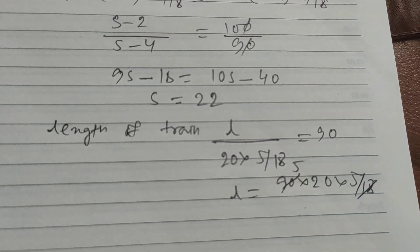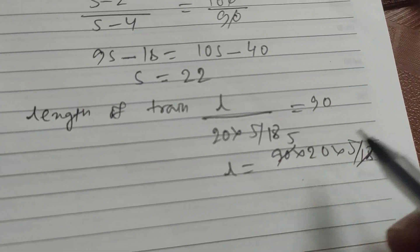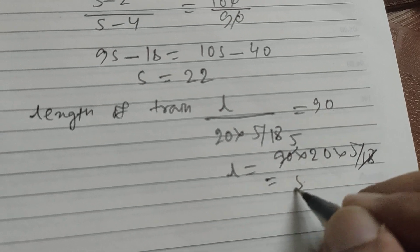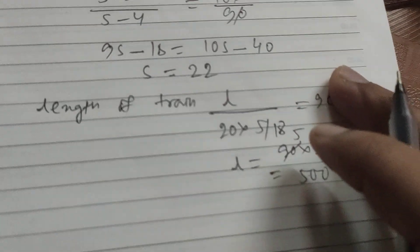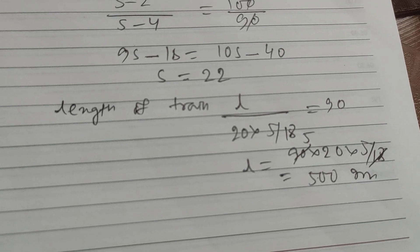90 times 20 divided by 18 times 5 equals 1800 divided by 90, which is 20, times 5 equals 500 meters.